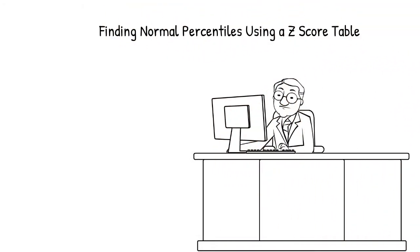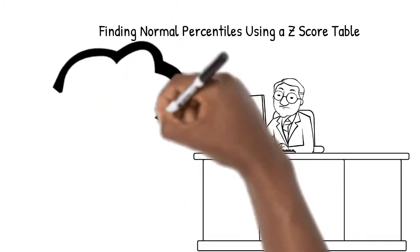In this video, we'll be finding normal percentiles using a z-score table when our z-scores are not integers. If that doesn't make sense to you yet, I'll elaborate soon.